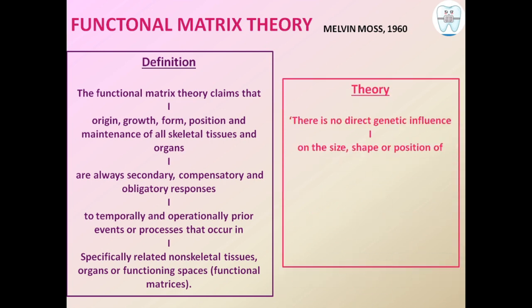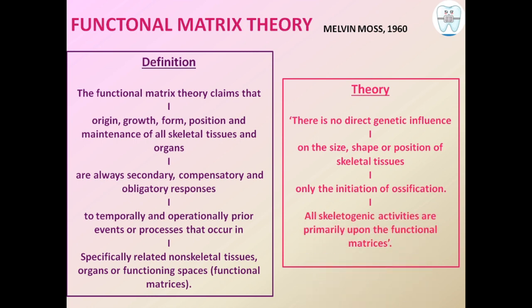What did this theory state? There is no direct genetic influence on the size, shape, or position of skeletal tissues — only the initiation of ossification. All skeletogenic activities are primarily dependent upon the functional matrices.